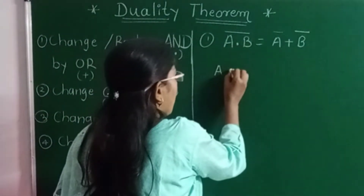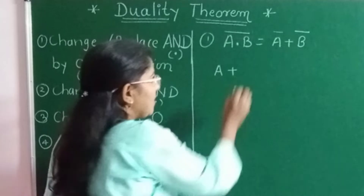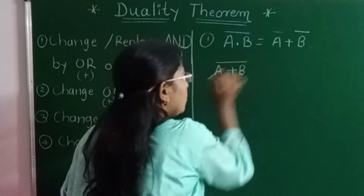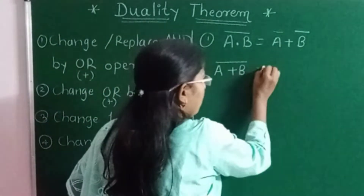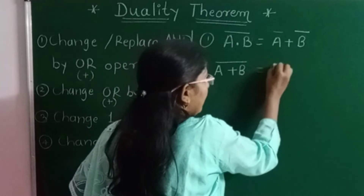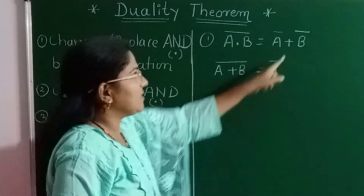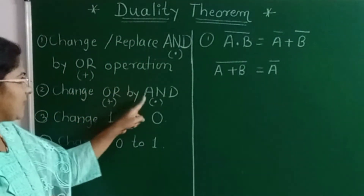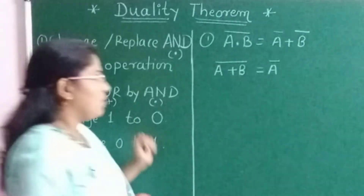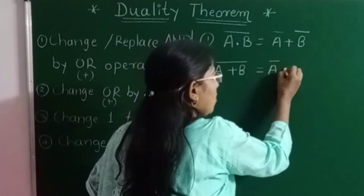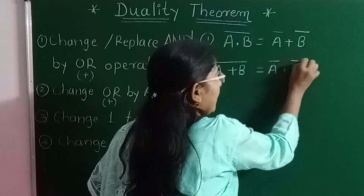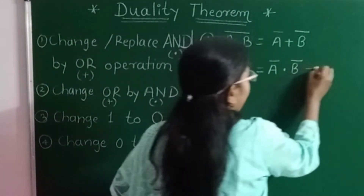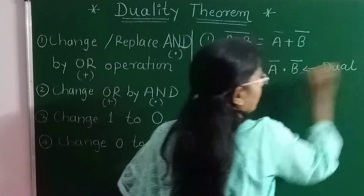So instead of the dot I will write plus. The next input variable is B — write it as it is, complement also as it is. Now the next variable is Ā. Plus is there, that means OR operator, but we have to change the OR operator to AND — replace plus by dot. So I replace this plus by dot and write the next variable B̄. This is the dual of the given expression.